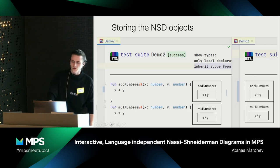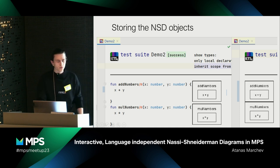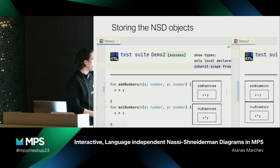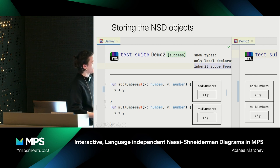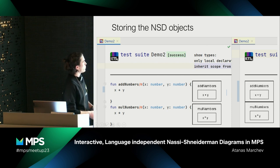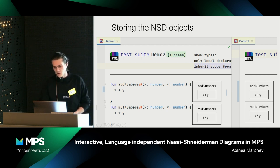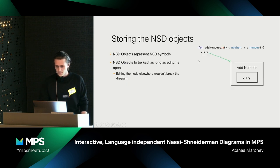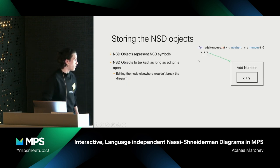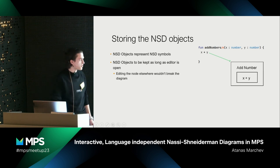These NSD objects have to persist as long as the editor is open. We have to be able to open and edit function nodes elsewhere without the diagram breaking. That means the diagram should be editor-specific. The first idea was using a static cache map that could hold all of the diagrams for the entire project, but that very quickly became unwieldy. So I changed it to actually having a cache class that is editor-specific, so the editor cell holds all of the NSD objects that later get drawn into the diagram.